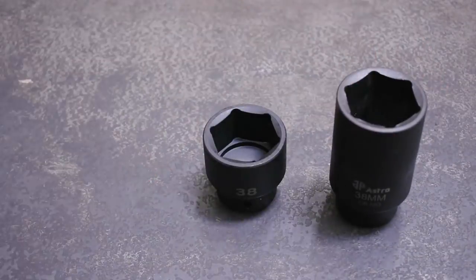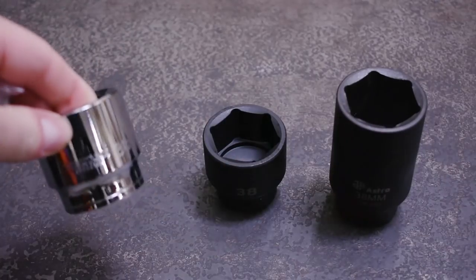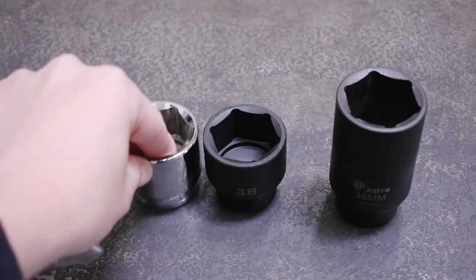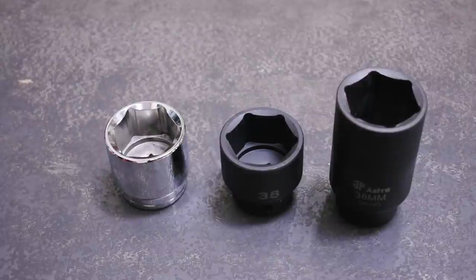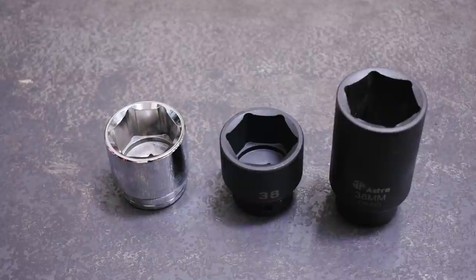So we have a Tecton shallow chrome socket that ideally you should not be using with an impact wrench, a Tecton shallow impact socket, and the deep impact socket we normally use on this channel to measure power. All these are 38 millimeters.